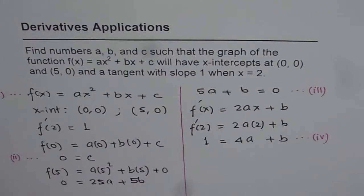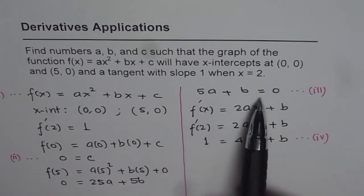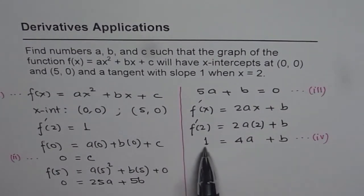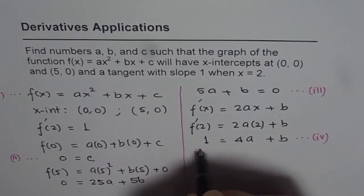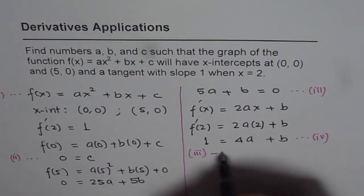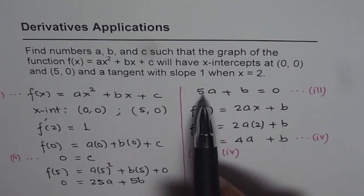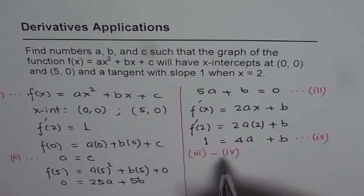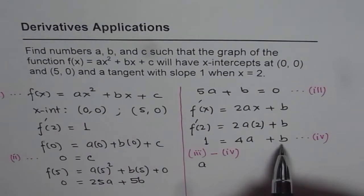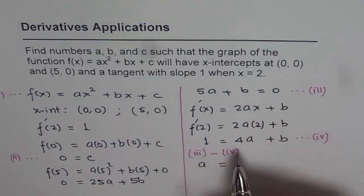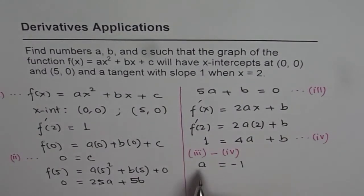Now as you can see, equation 3 and 4 have two variables each. We can solve them simultaneously and get our answer. So we have 5a + b = 0, and 4a + b = 1. So what we will do now is, we will do equation 3 minus equation 4. So if we do equation 3 minus 4, 5a minus 4a will give us a, and b minus b is 0, and 0 minus 1 gives us -1. So we get the value of a as -1.